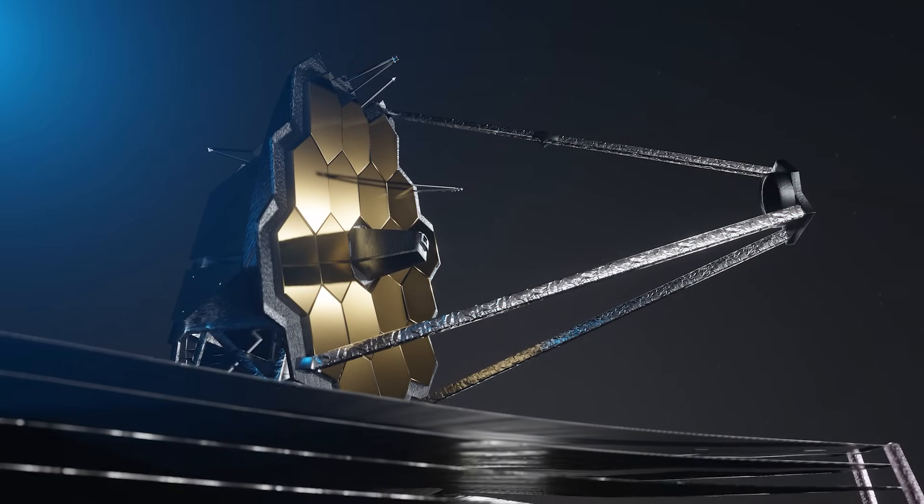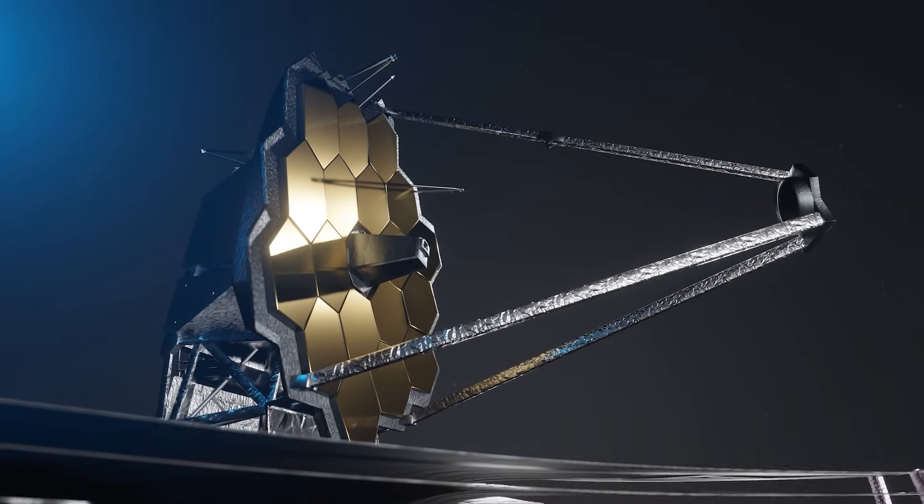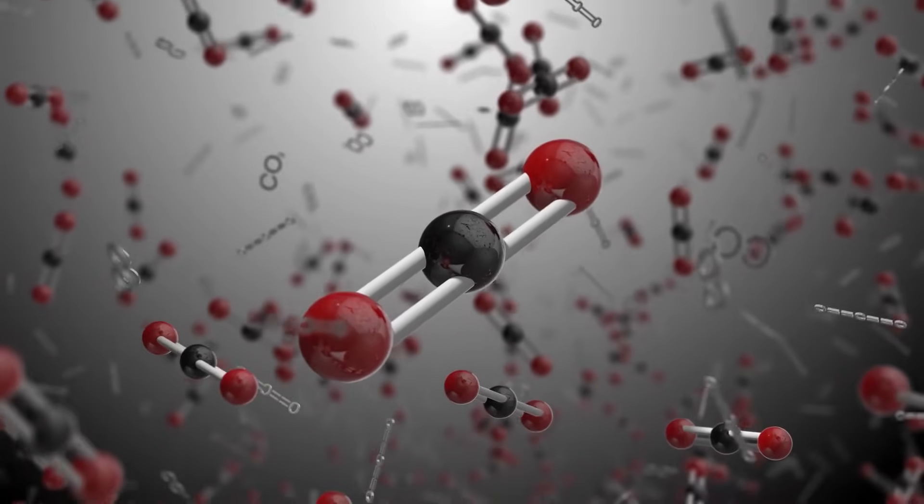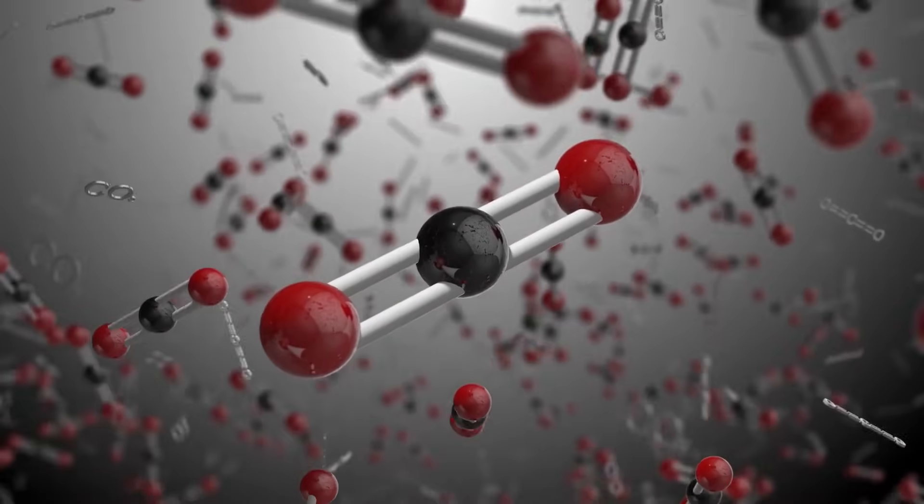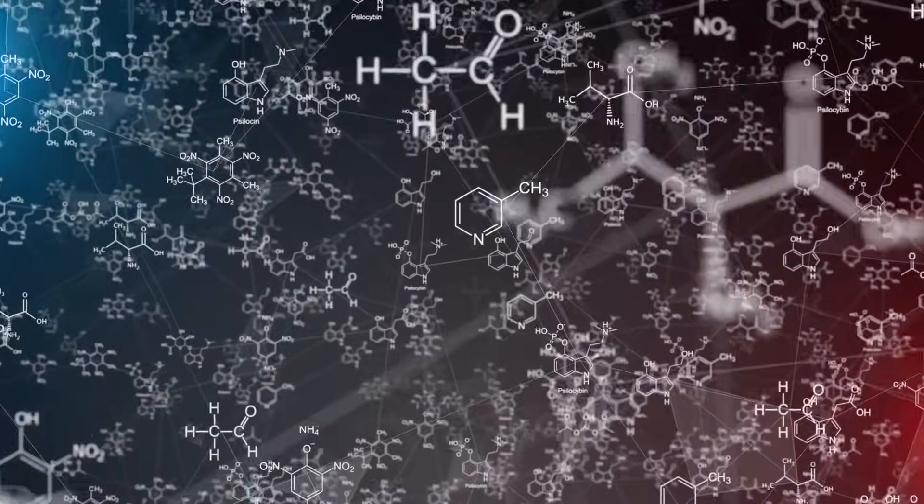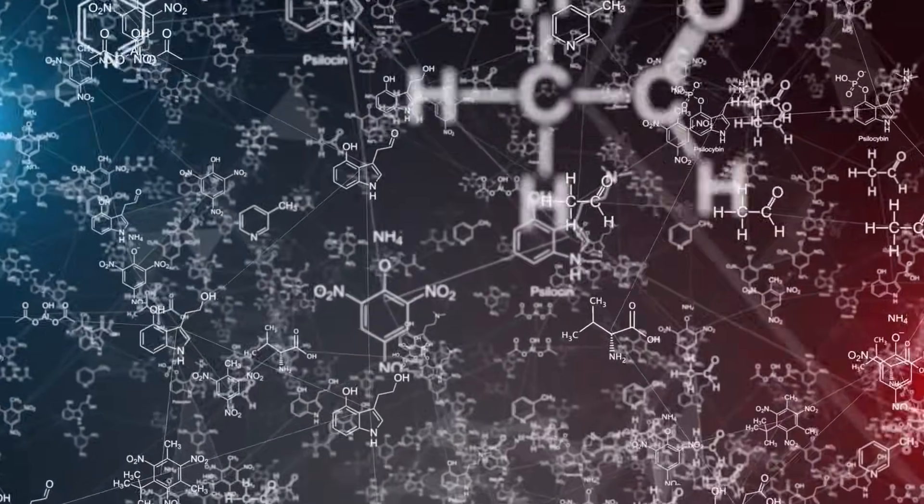The results from the James Webb Telescope were particularly spectacular. It recorded an extremely high ratio of carbon dioxide to water, about 8 to 1. This makes 3i Atlas one of the most unusual comets ever observed, chemically speaking.